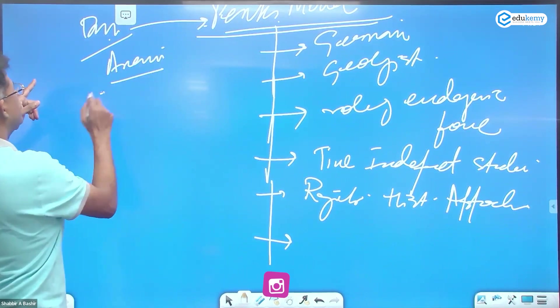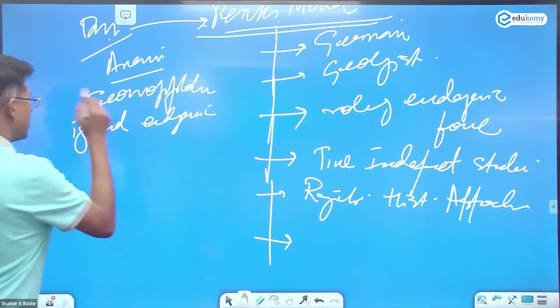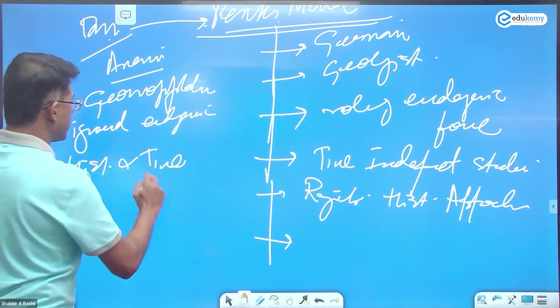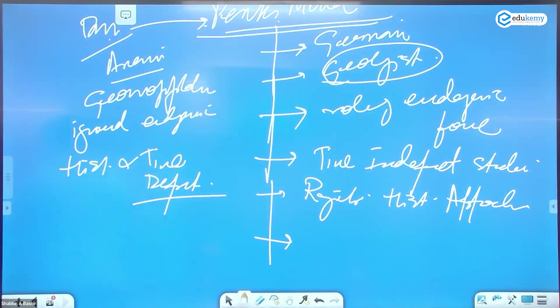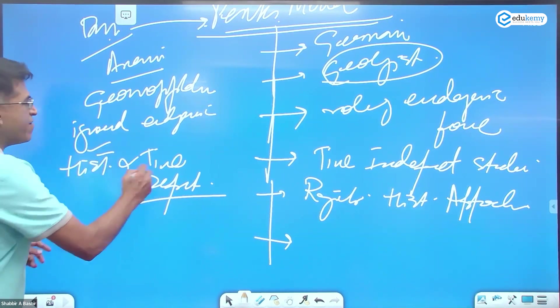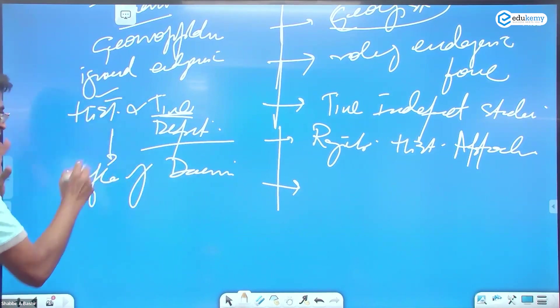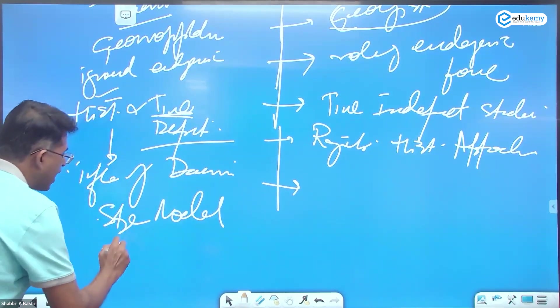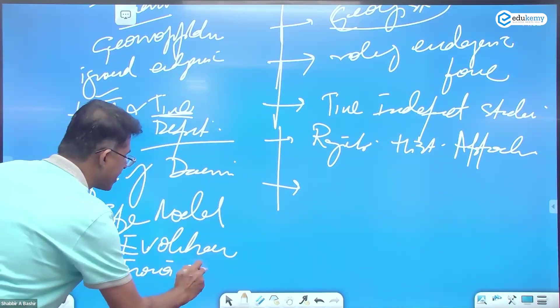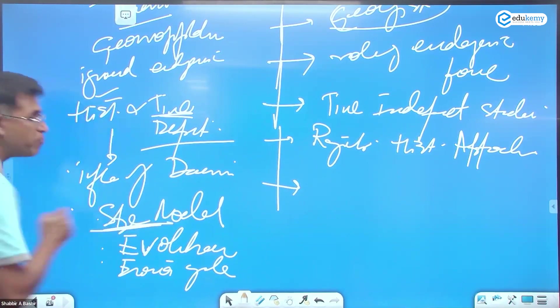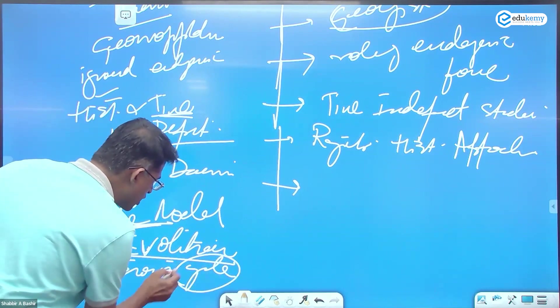One is Pank, a German. Pank is a geologist. Pank talks about the role of endogenic forces. And Pank is time independent studies. Pank rejects historical approach. So Davis, an American. Davis was a geomorphologist. Davis ignored the role of endogenic. Davis is historical. And Davis is time dependent.